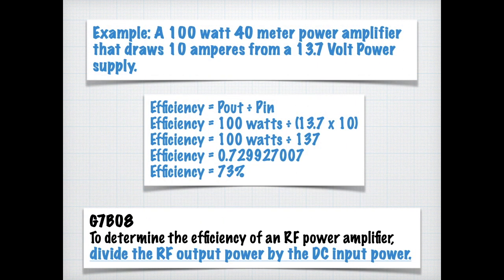There's no need to get your calculator out quite yet. I'm just doing this to explain efficiency. For example, a 100 watt 40 meter power amplifier draws 10 amps from a 13.7 volt power supply. Power out equals power in. In order to determine that, we divide 100 watts output by the input. To get the input, we have to multiply 13.7 times 10 because power is I times E. So our efficiency equals 100 watts divided by 137, which comes to 0.729927007, which is 73%. For the exam, however, you need to know that to determine the efficiency of an RF power amplifier, divide the RF output power by the DC input power.